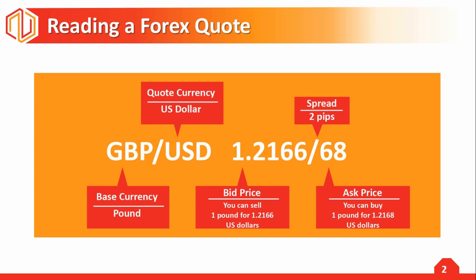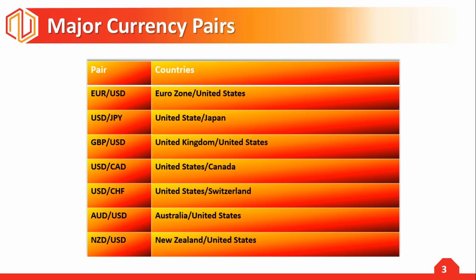If you find these terms initially confusing, it helps to remember that bid and ask are from the broker's perspective, not yours. When you are buying, you'll pay what the broker is asking for the currency. When you are selling, you will need to accept what the broker is bidding. The difference between the bid price and the ask price — in this case 2 pips — is called the spread, which is simply the broker's commission on this trade.